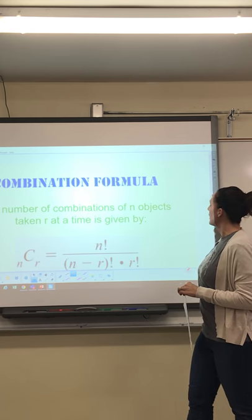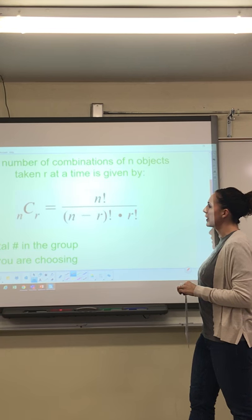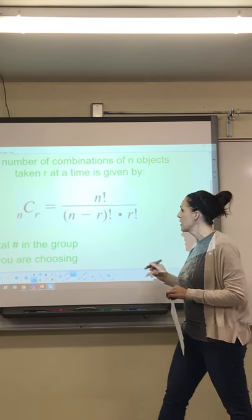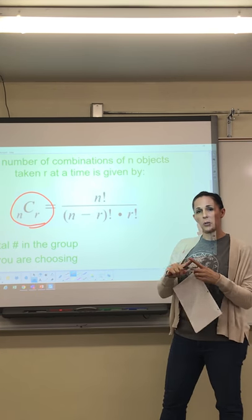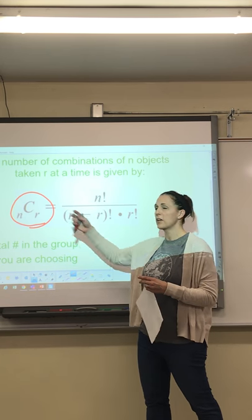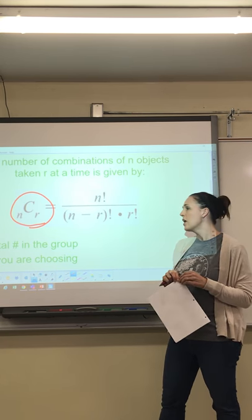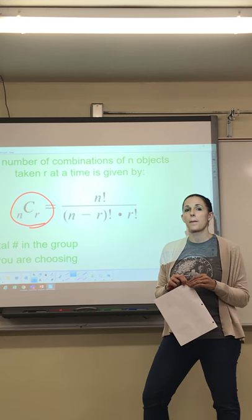So this is the combination formula. Fortunately, our calculators can do this for us. You just have to go to the probability button, just like you did for factorials and permutations. And now you'll see this one, nCr, which stands for the combination computation. Your n is still the total number in your group, and your r is still the number you are choosing.